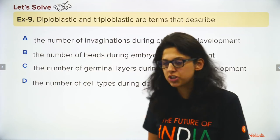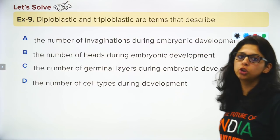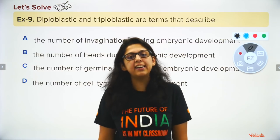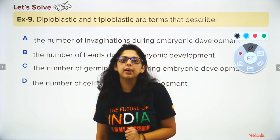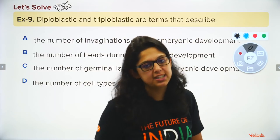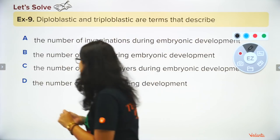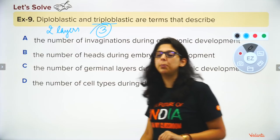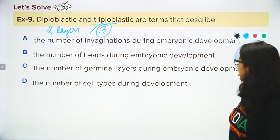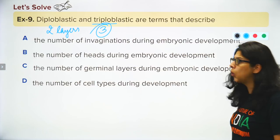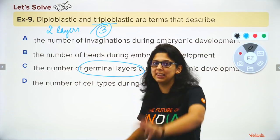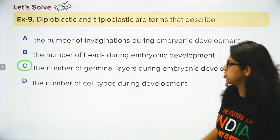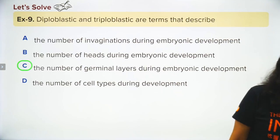Diploblastic vs triploblastic: if an organism's body is made of two germ layers (ectoderm and endoderm), it is diploblastic. If it has three germ layers (ectoderm, mesoderm, endoderm), it is triploblastic. This is determined during gastrulation.